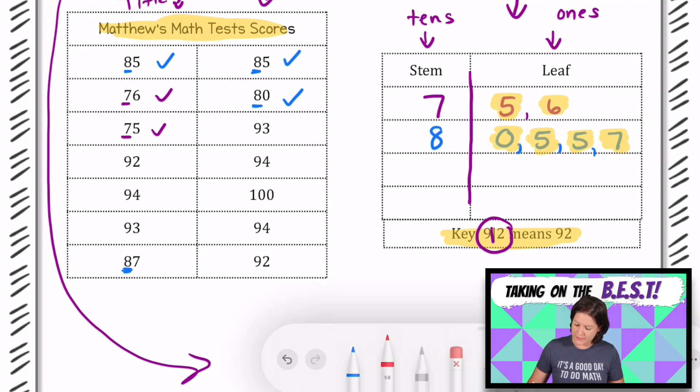We have a stem of 7 for 70, a stem of 8 for 80, and now we're moving up to the next stem, which would be 90. So let's put a 9 there. We have 92, 94, 93, 93, 94, and 92. We need to take the smallest number first. We have two 92s. So let's put 92, 92.